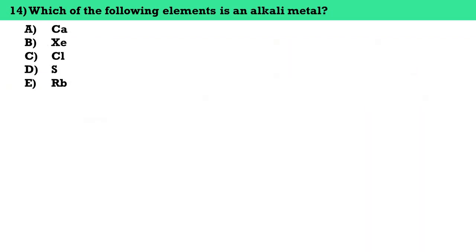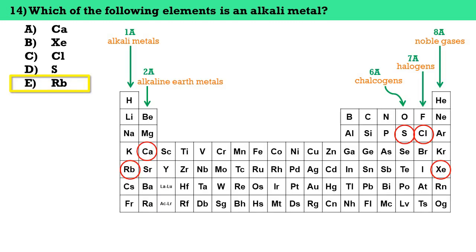Number fourteen, which of the following elements is an alkali metal? The answer here is letter E, rubidium. All group 1A elements except hydrogen are alkali metals.